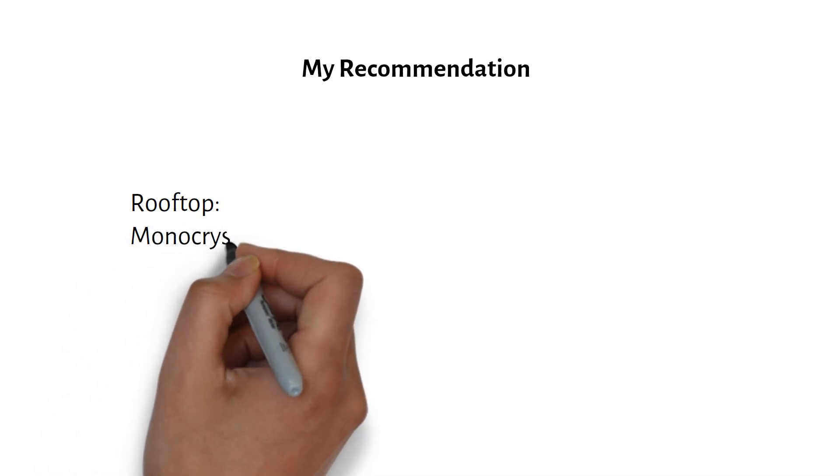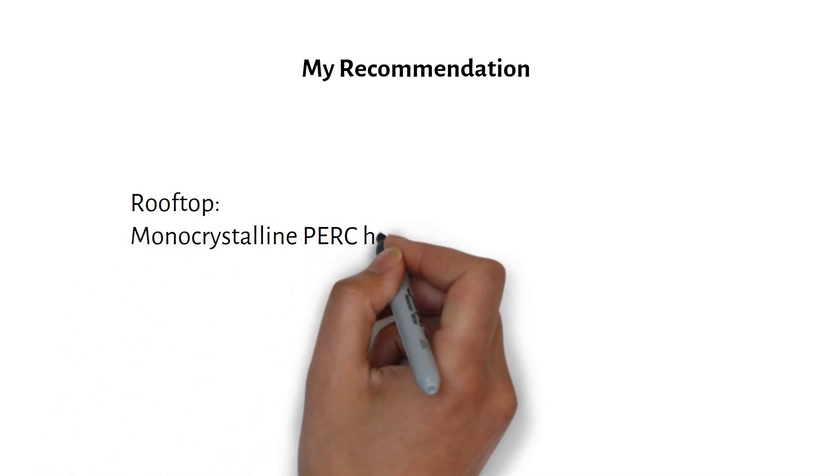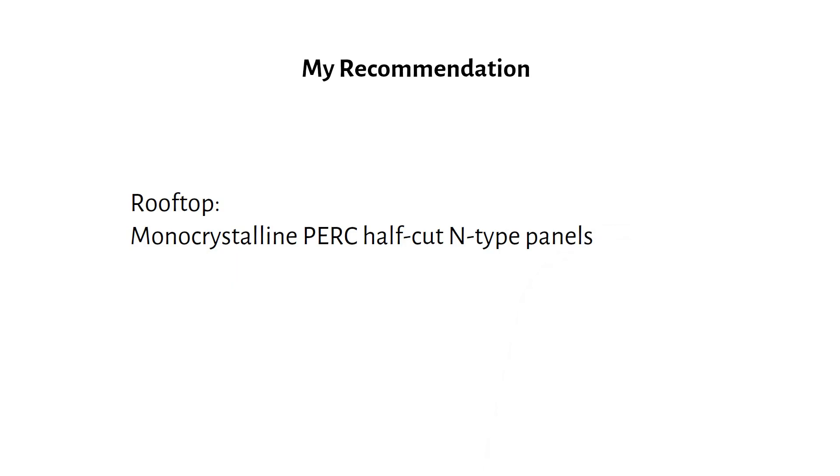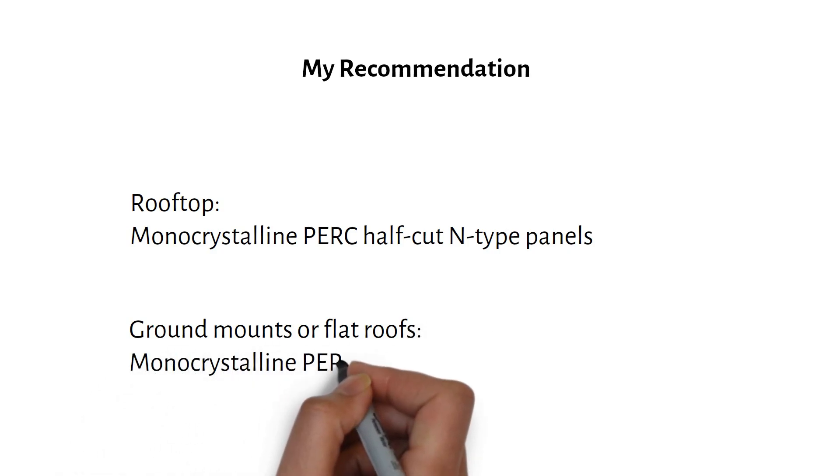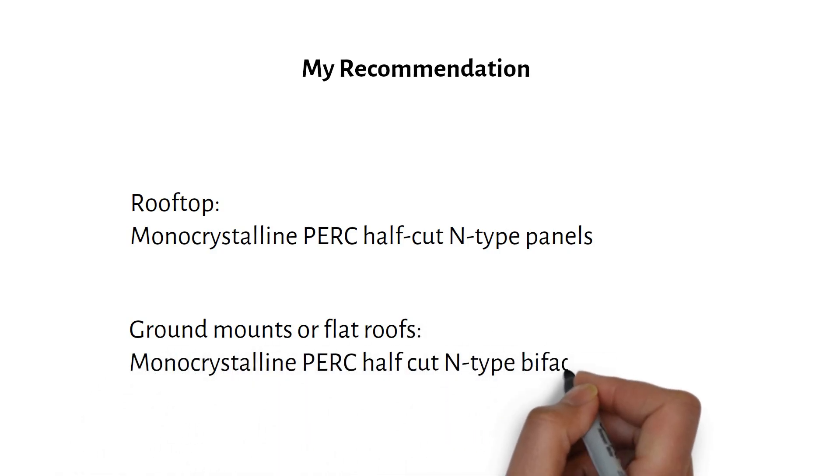So what do I recommend? For rooftop installs, go with monocrystalline, PERC, half cut, N-type panels. Their performance is great for the price. For ground mounts or flat roofs, bifacial panels are a better choice. HJT panels aren't common in the US yet, but I expect they'll be available soon. Of course, check what's available locally or online. I will link my recommended panels in the description.